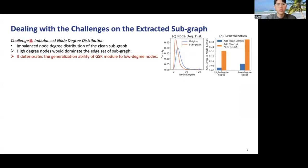The second challenge is the imbalanced node degree distribution. We observed that the node degree distribution of the clean subgraph is highly imbalanced, as shown in Figure C, which degrades the generalization ability to low-degree nodes, as shown in Figure D.